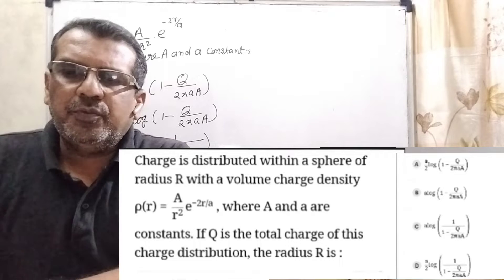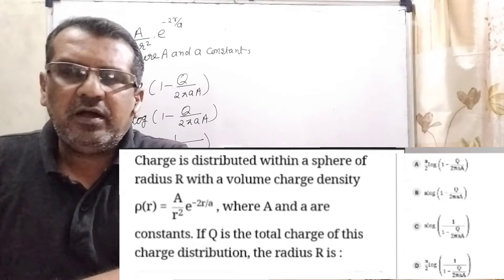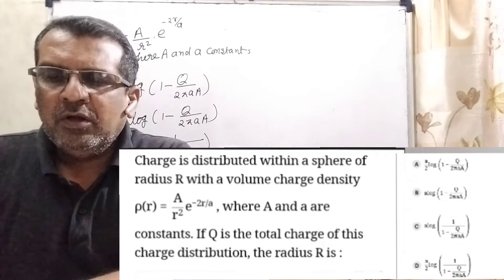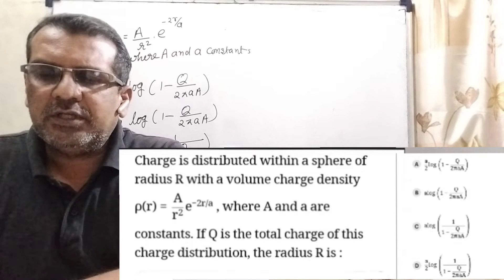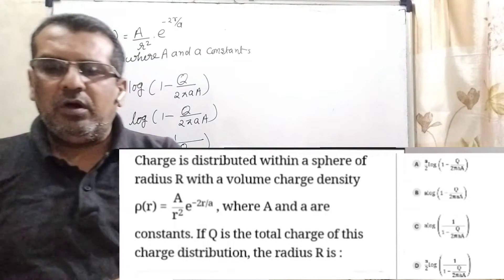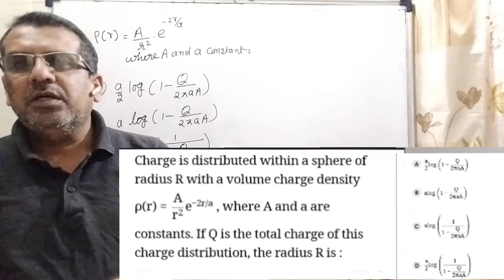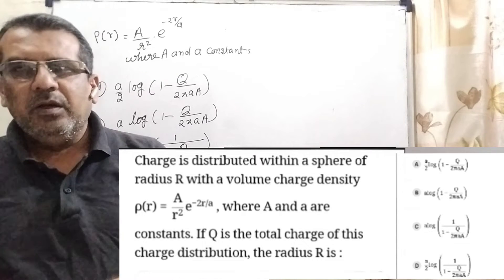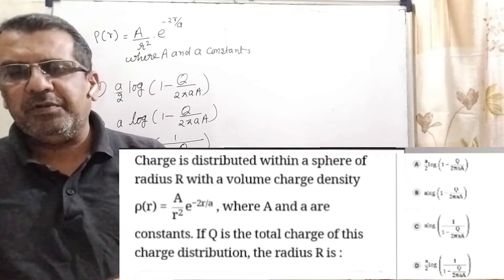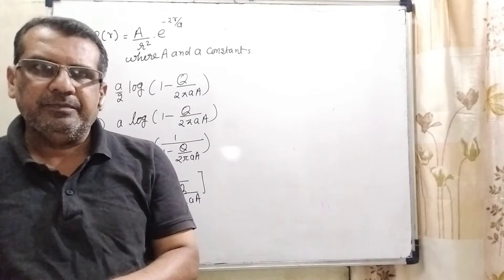Now here is the question. Charge is distributed within a sphere of radius capital R with a volume charge density. Rho is a function of r equal to A divided by r-squared, into e raised to the power minus 2r upon small a. Here r is small. Where capital A and small a are constants. If Q is the total charge, the radius capital R is. Option A: A/2 · log(1 − Q / 2π·a·A). Option B: a · log(1 − Q / 2π·a·A). Option C: a · log(1 / (1 − Q / 2π·a·A)).